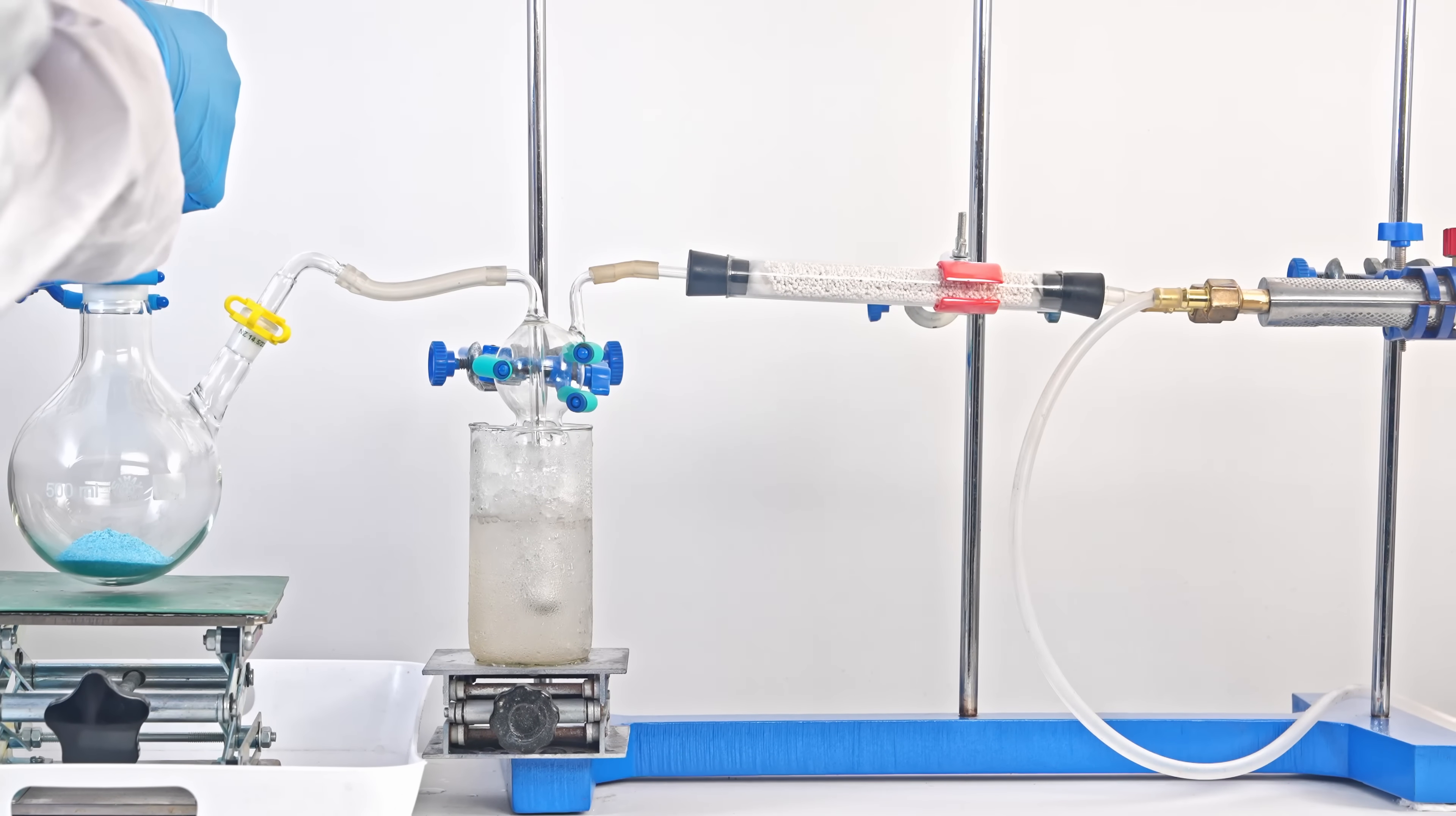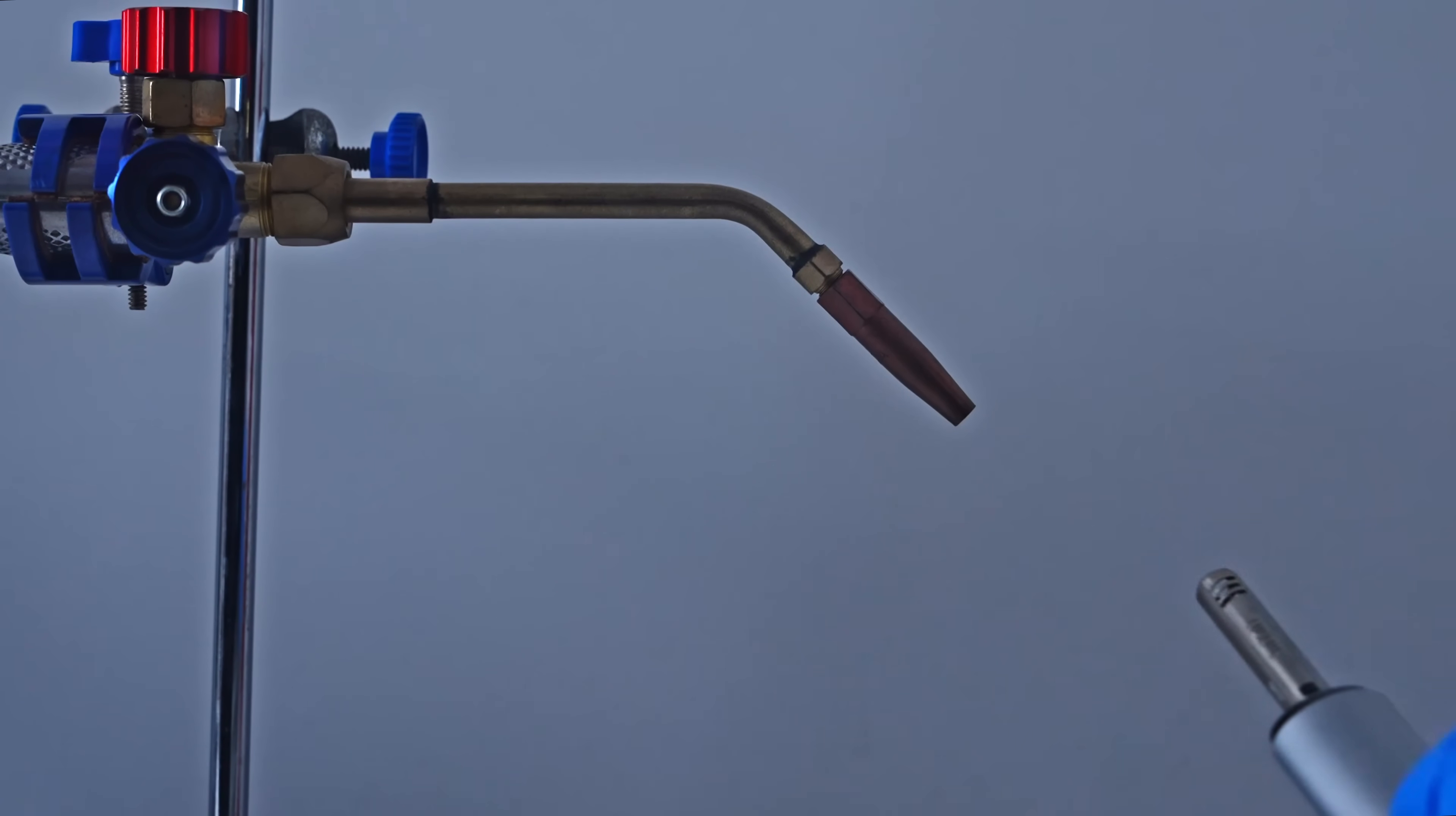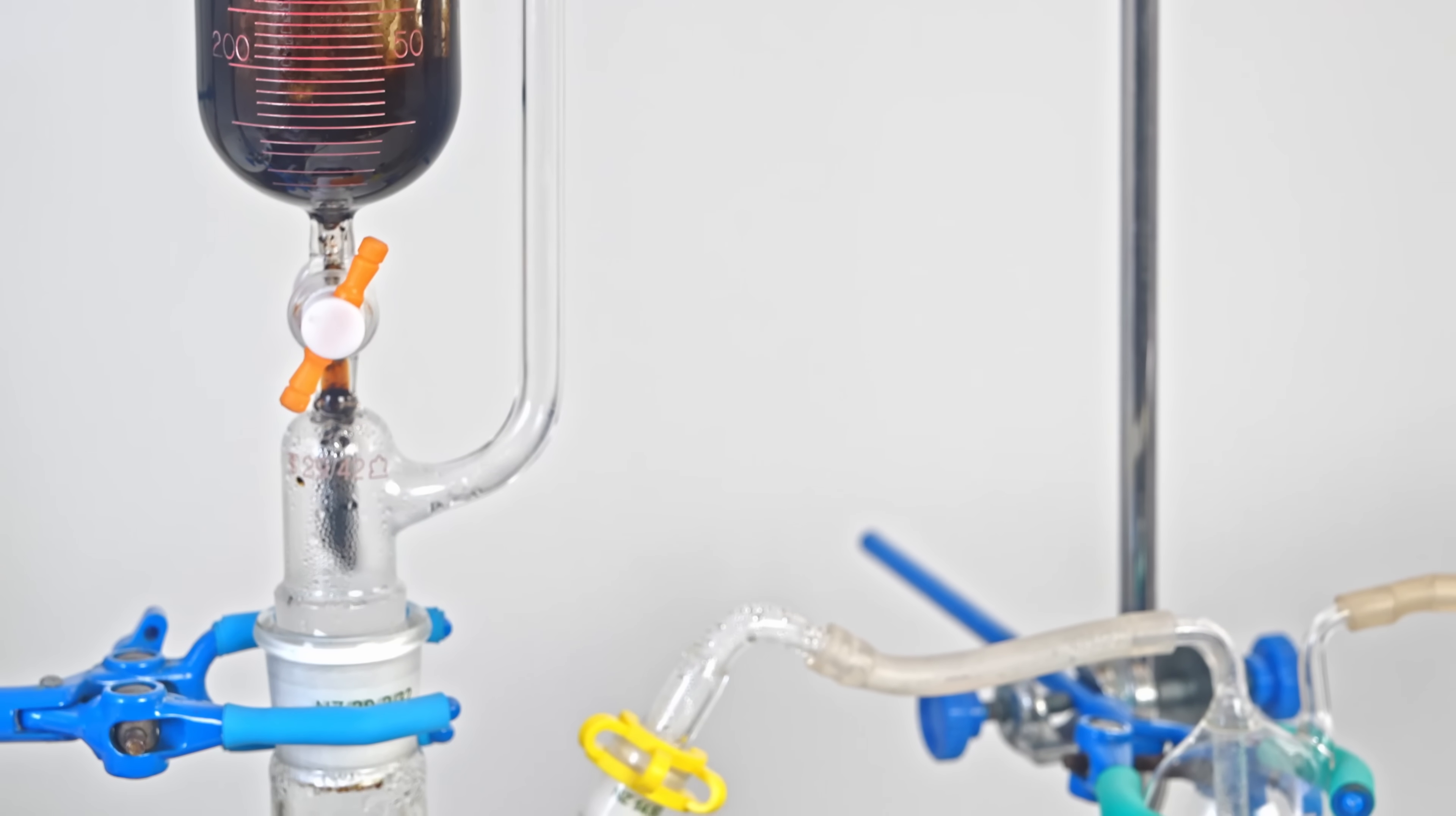So, I open the tap of the dropping funnel, and the potassium cyanide solution begins to interact with solid copper sulfate. This immediately produces gas bubbles. This is cyanogen being released. However, I was unable to ignite it. Most likely, with this method of synthesis, all the resulting cyanogen was polymerized before it reached the autogenous torch. Look, the entire dropping funnel is filled with polymerized cyanogen. It looks like this is a bad method of synthesis.